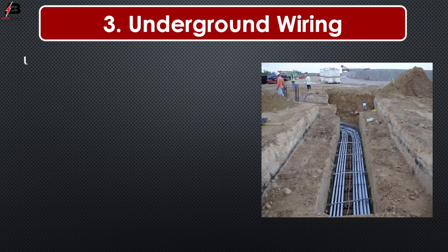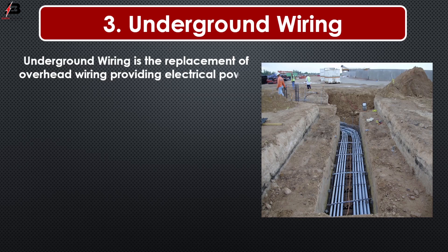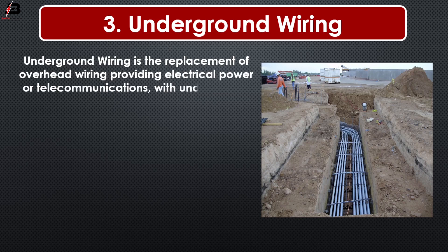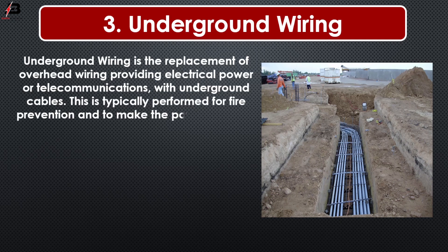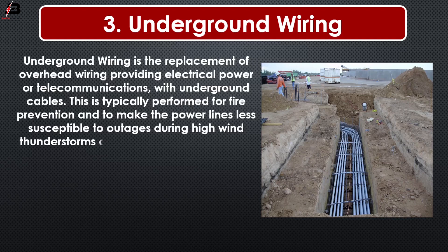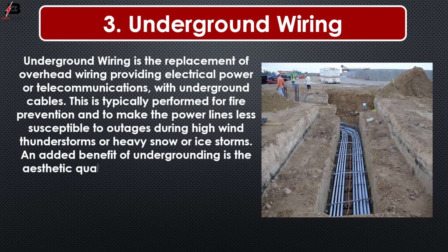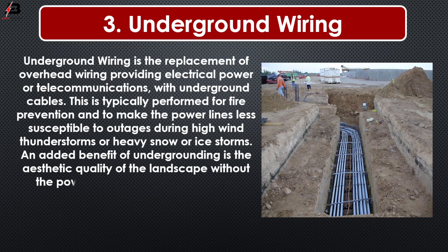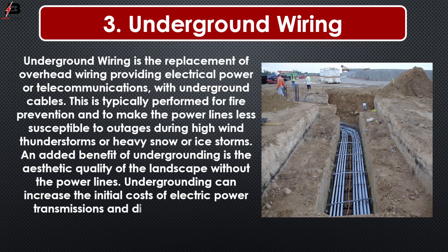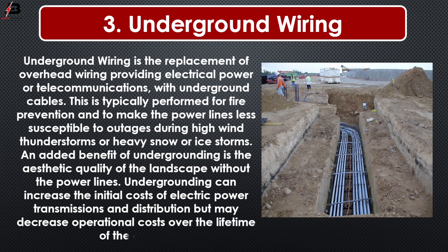Underground wiring is the replacement of overhead wiring providing electrical power or telecommunication power lines. It is typically performed for iron prevention and to make the power lines less susceptible to outages during high wind, thunderstorms, or heavy snow or ice storms. An added benefit of undergrounding is the aesthetic quality of landscape without the power lines. Undergrounding can increase the initial cost of electric power transmission and distribution but may decrease operational cost over the lifetime of the cable.